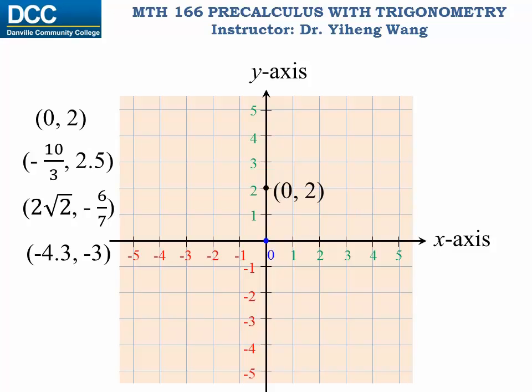For the second point, the x-coordinate negative 10 over 3 tells you that the point is to the left of the y-axis, and the y-coordinate 2.5 tells you the point is above the x-axis.